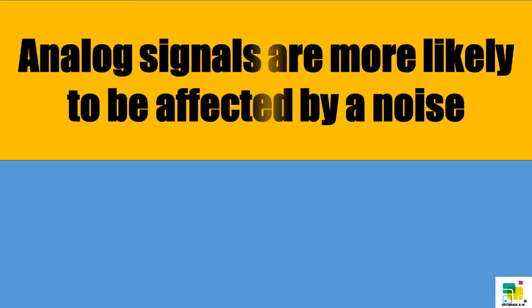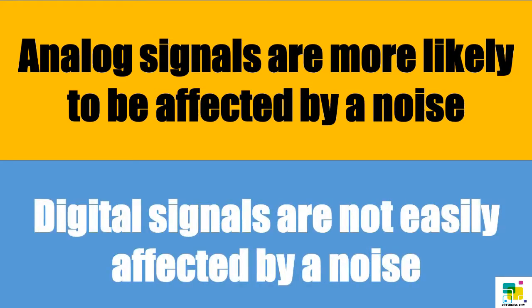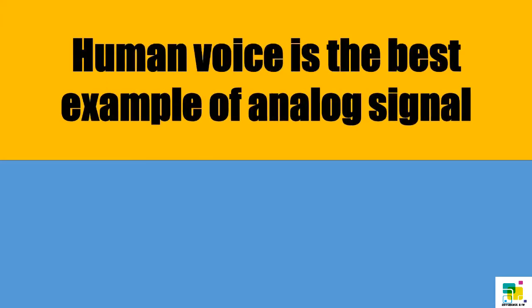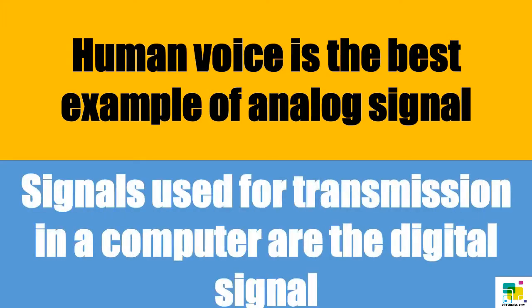Analog signals are more likely to be affected by noise, but digital signals are not easily affected by noise. Human voice is the best example of an analog signal, and signals used for transmission in a computer are the digital signal.